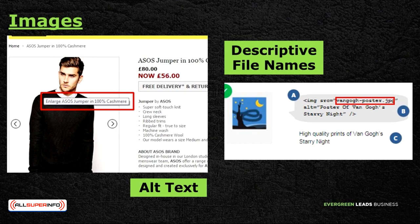Since we're talking about images, it is advisable to use original images and reference the source if you're using an existing one. Optimize the size of your images — the smaller the file size the better, since you want your site to load as fast as possible. Make sure your target keyword is part of your image's alternate text, or alt text. Use descriptive file names rather than random names like 'image1145.jpg'. For example, use something like 'man-eating-hot-dog.jpeg' — give them meaningful, descriptive names.